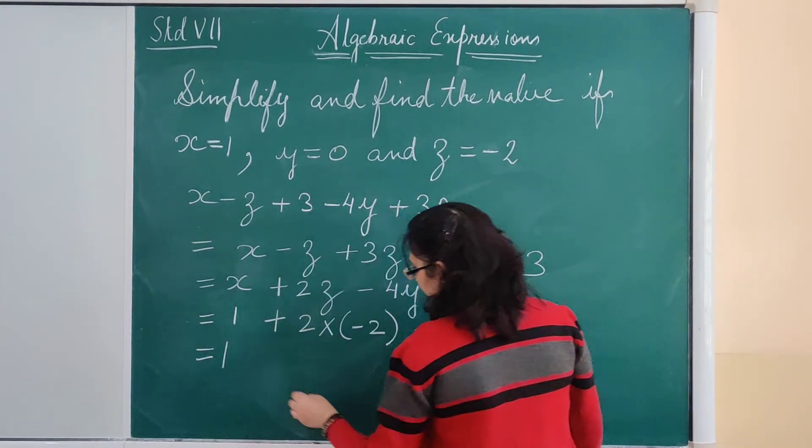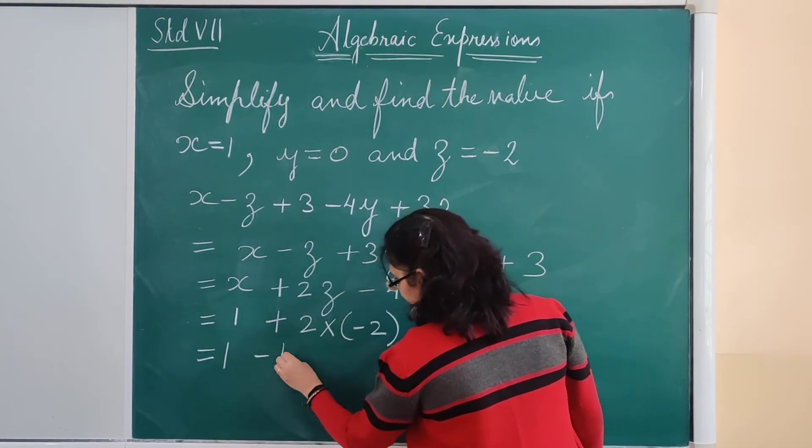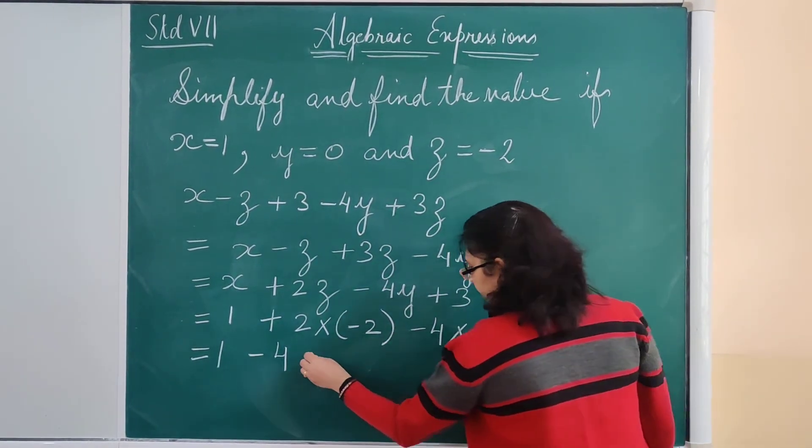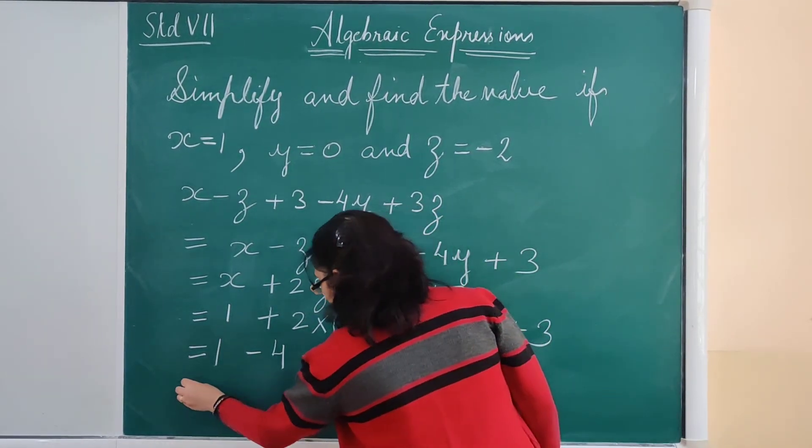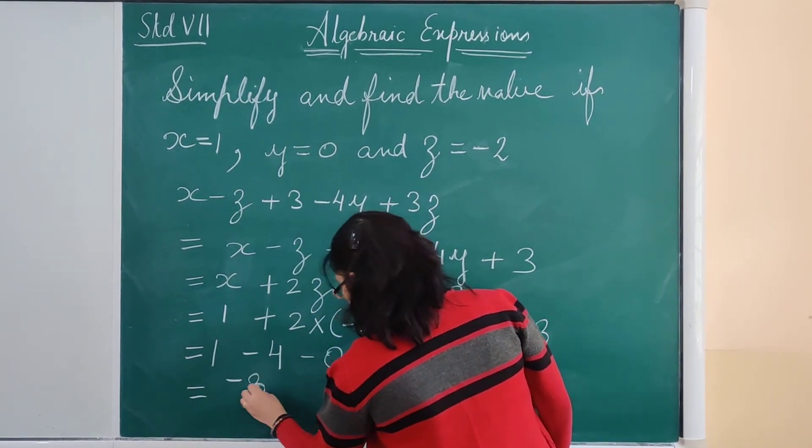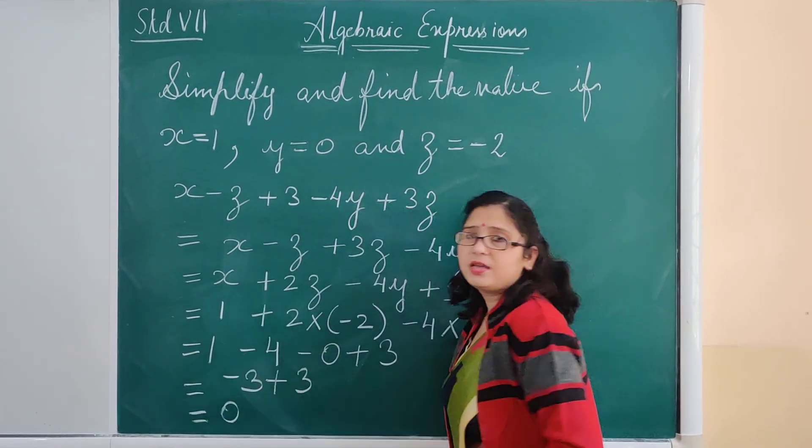So 1, 2 multiplied by minus 2 is minus 4, minus 0, plus 3. This simplifies to minus 3 plus 3. The answer is 0.